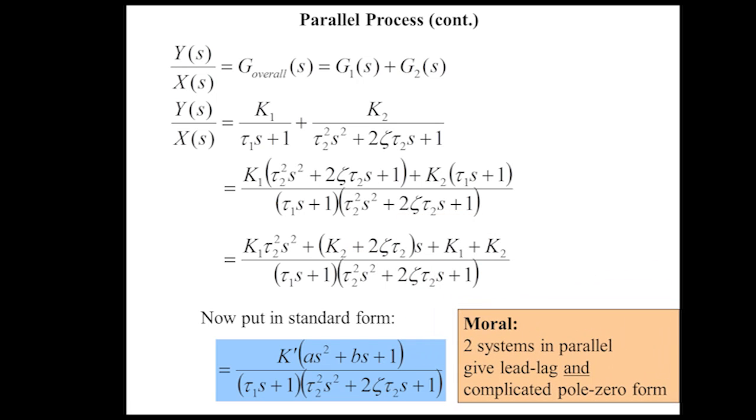This was a parallel process — a first and a second-order system combined — resulting in a third-order system in the denominator and a second-order system in the numerator. This is referred to as a lead-lag, and it gives a complicated zero-pole form.